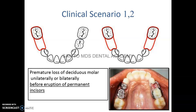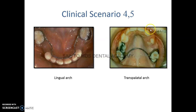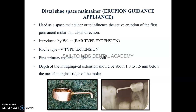After the eruption of upper incisors, the space maintainer is the nance palatal arch or transpalatal arch. If there is tooth loss on both sides, give the nance palatal arch; if tooth loss is only on one side, give the transpalatal arch. In the lower arch, for bilateral or unilateral tooth loss after incisor eruption, the ideal space maintainer is the lingual arch.